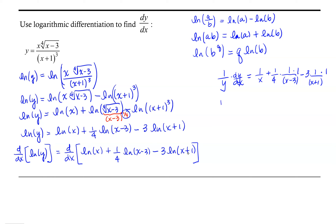So we have 1 over y times dy/dx equals 1 over x, plus 1 over 4 times x minus 3 — multiplying that middle term together — minus 3 over x plus 1.